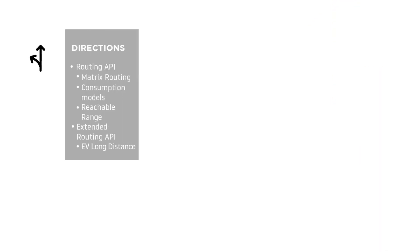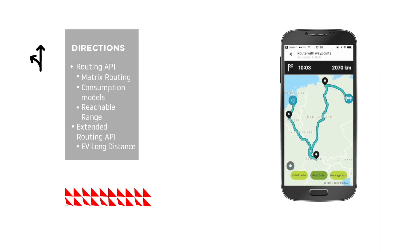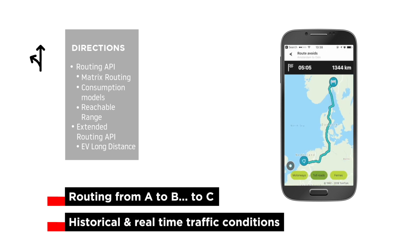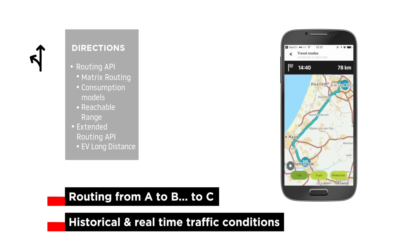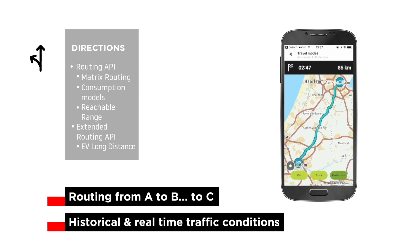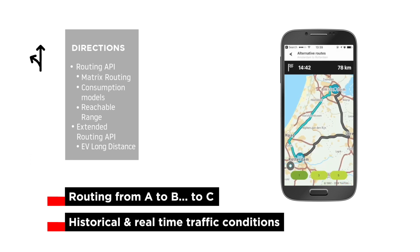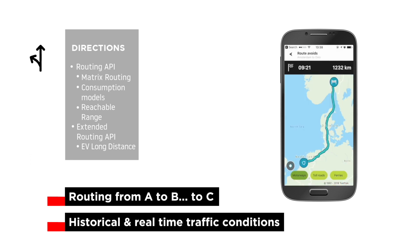The Directions family enables planning a route from A to B to C, considering both historical and real-time traffic conditions. Applications can provide users with highly accurate travel times, live travel update information, and route instructions — for both internal combustion engines and electric vehicles.